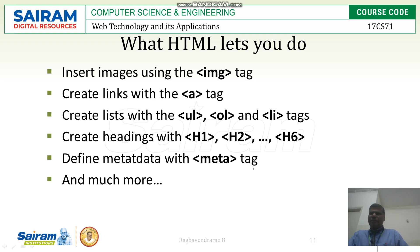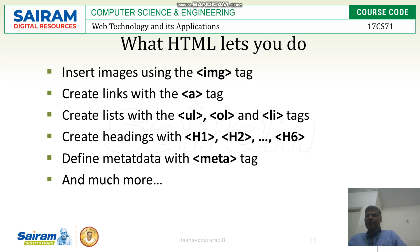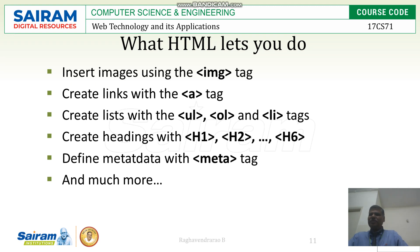Then metadata. Metadata is nothing but data on data. For example, an image is there, and for that image many properties are going to be there — data on that particular data. That is what we call metadata.